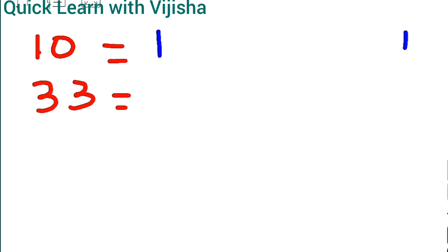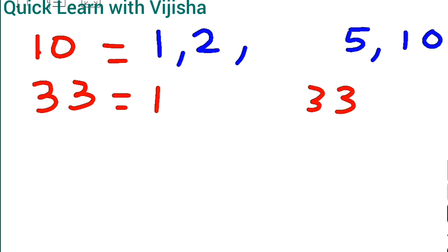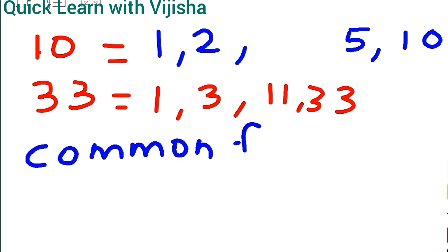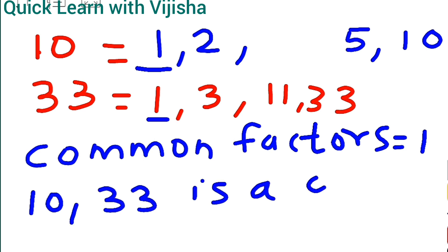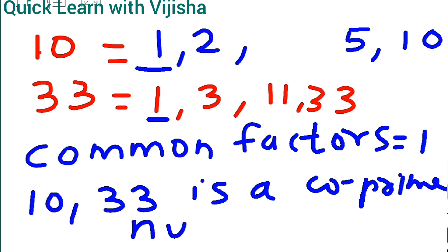Third question: 10 and 33. Factors of 10 are 1, 2, 5, and 10. For 33: 1 × 33, 3 × 11 = 33 — so the factors are 1, 3, 11, and 33. Coming to the common factors — only 1 is there as a common factor. So 10 and 33 is a co-prime number.